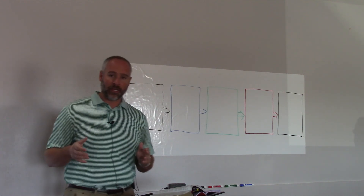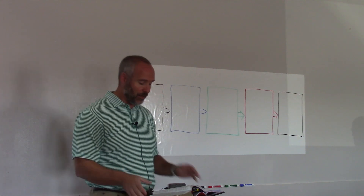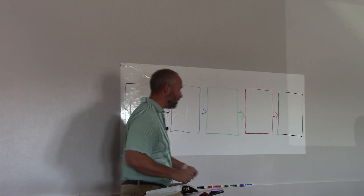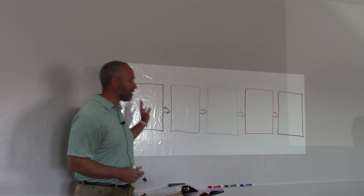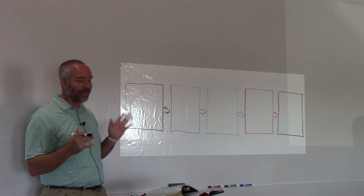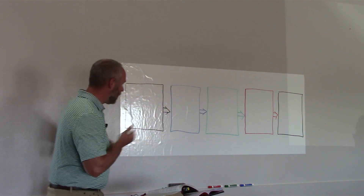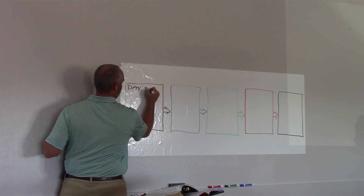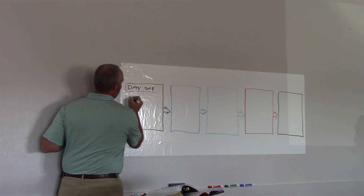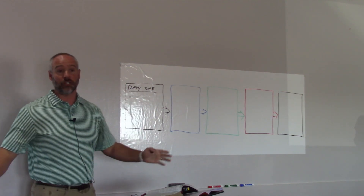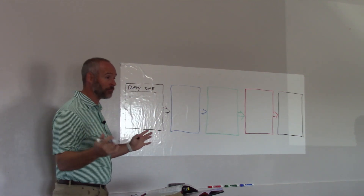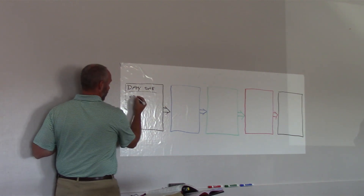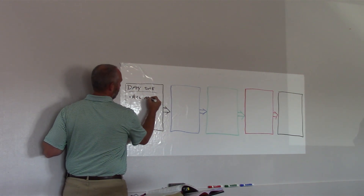Obviously, we're going to get into the sixth day of creation here today. Since it's been a few weeks, let me go back real quick and let's talk about the five days we've had so far. On day one, we got the creation of all matter. 'In the beginning, God created the heaven and the earth.' So we got all matter. According to verse 2, it was without form - it was void, just chaotic.